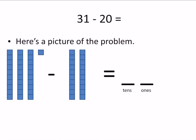31 we see is three stacks of 10, 10, 20, 30, and then one block by itself.